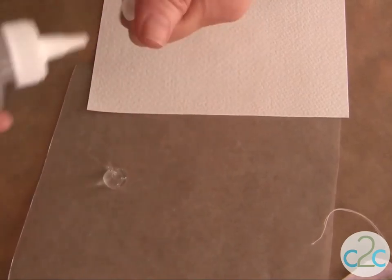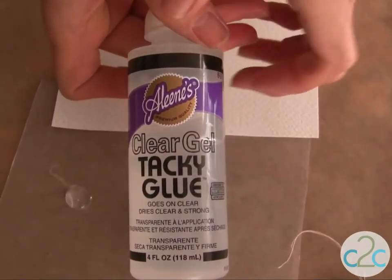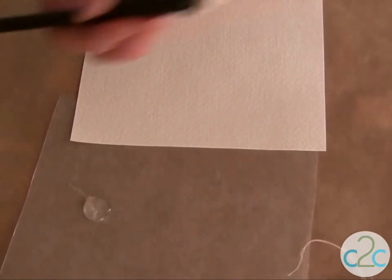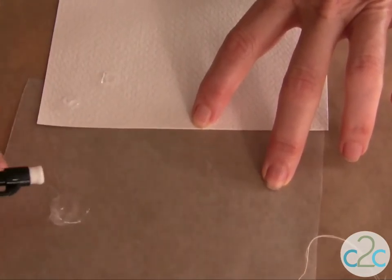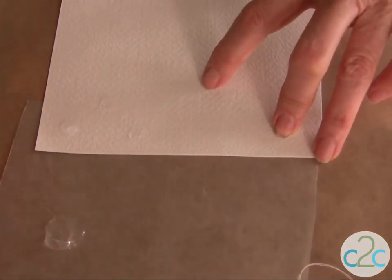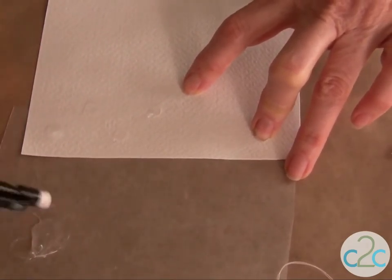So I am using my Aleene's Clear Gel Tacky Glue. I'm not using it as glue today, I'm using it as a resist technique. Using the eraser from your pencil just dip it right into your Aleene's Clear Gel Glue and let's put some dots on.